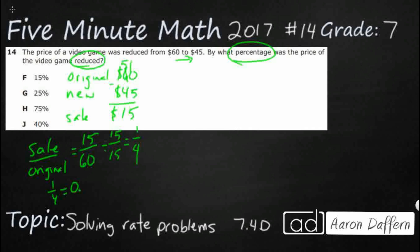And that is going to get you one-fourth. And then we just need to know that one-fourth is equal to 0.25. It's a quarter worth $0.25, so that's going to equal 25%. So that's going to get us G. Now, what's the other way to solve this?